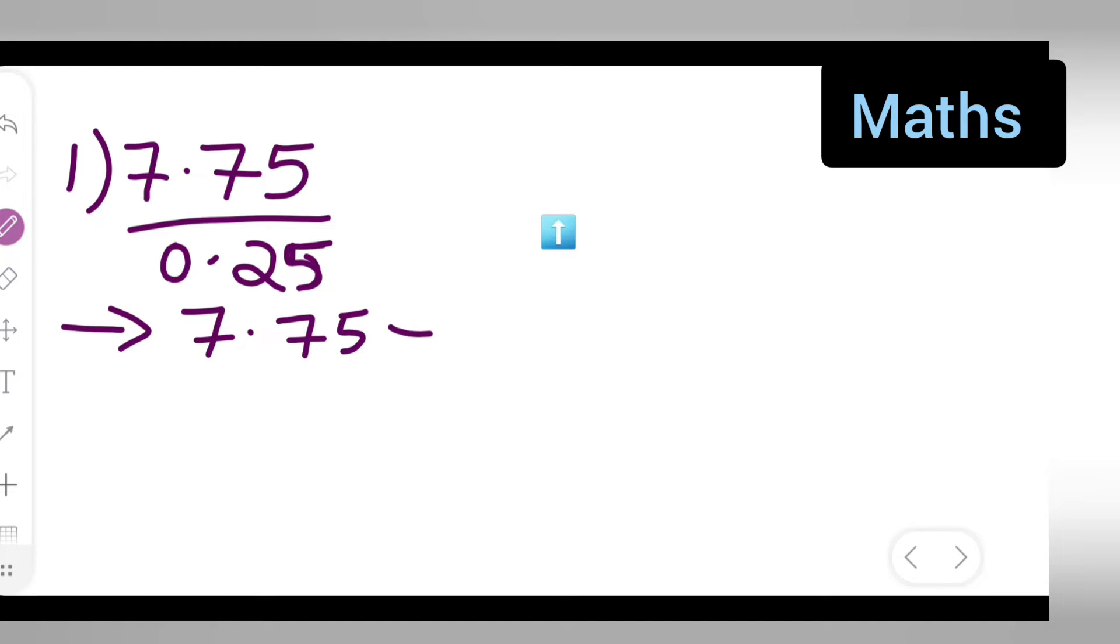Divide by 0.25. Next step will be - if you want to remove the decimal point, this is which place? Ten, hundred place. So the decimal point is in the hundredth place, so obviously what you are going to do is...